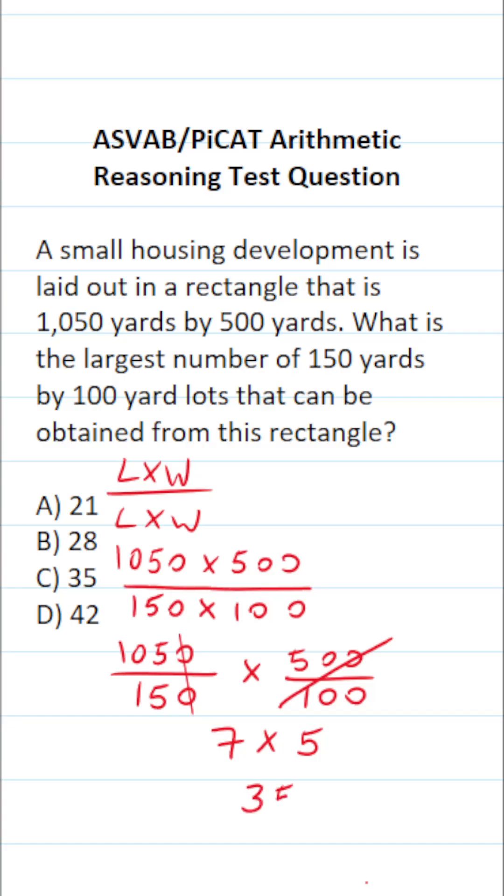7 times 5 is 35. In other words, they can create 35 small lots from this big rectangular lot. So this one is going to be C.